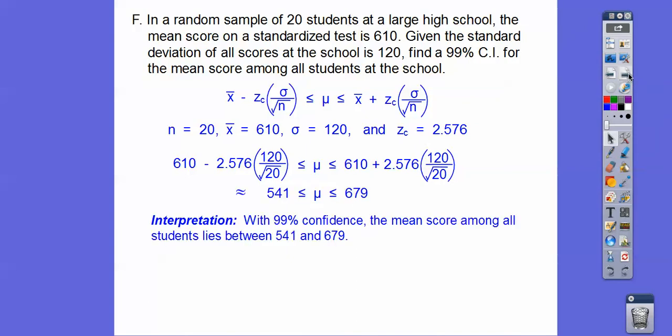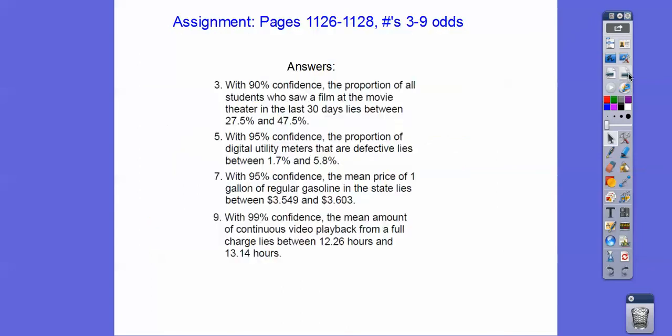Make an interpretation, so with 99% confidence, the mean score among all students would lie between 541 and 679. If you are in my class, that would be your assignment. Take care.